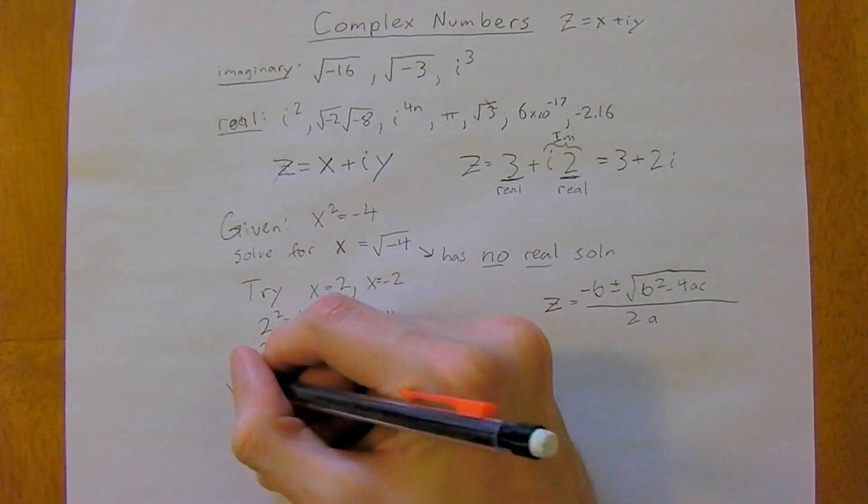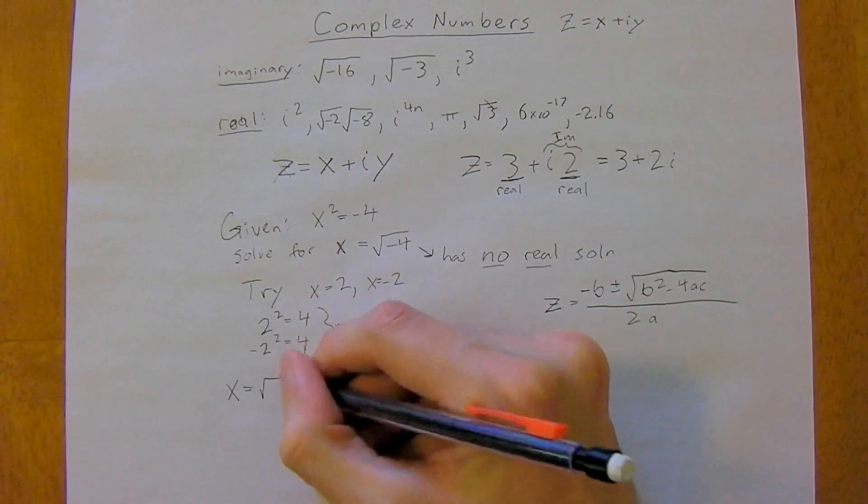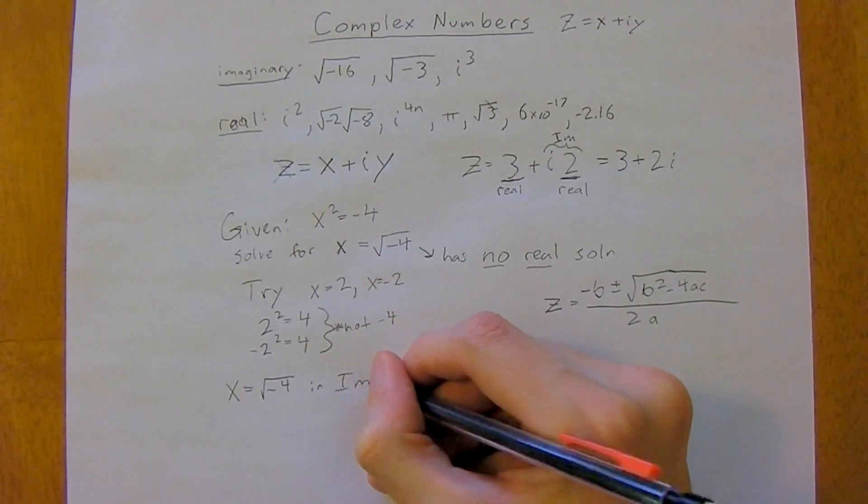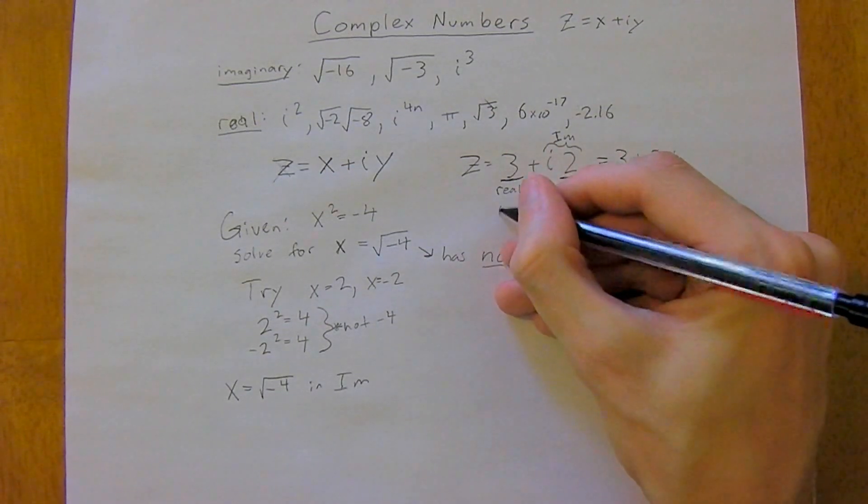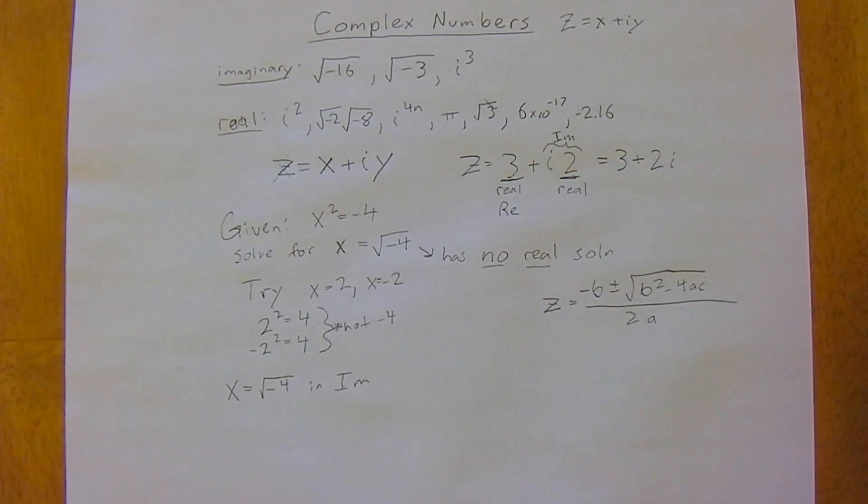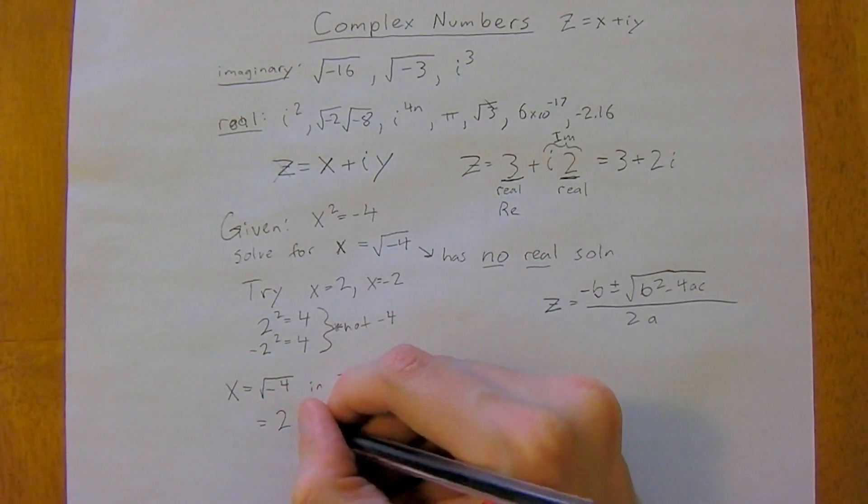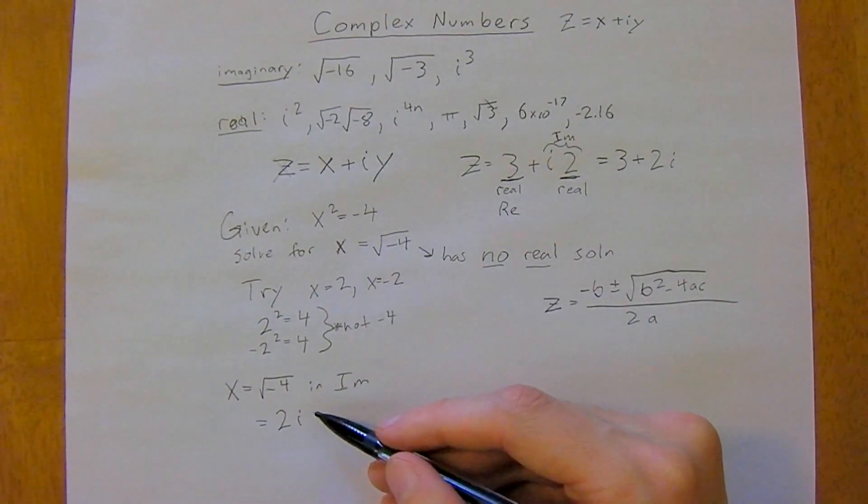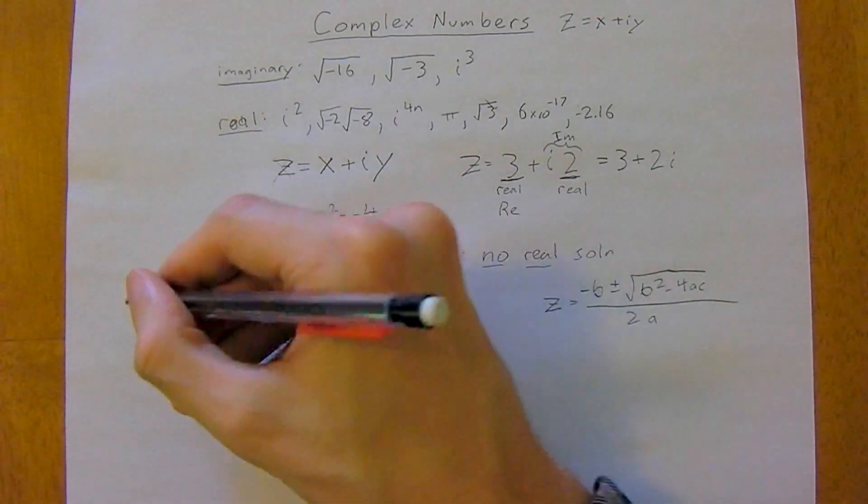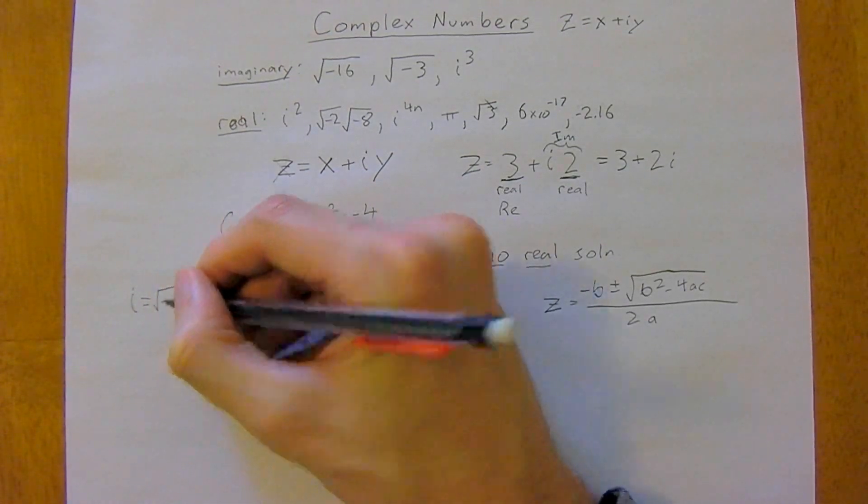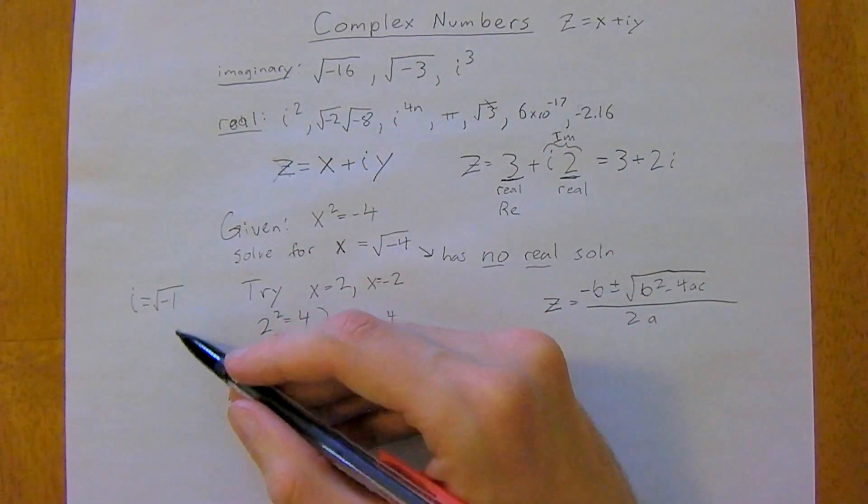And so in this case we would say that x equals square root of negative 4 is imaginary, and we would just label this as 2i. So that's how we're going to denote it. And i—this is quite important as well—i is just equal to the square root of negative 1.